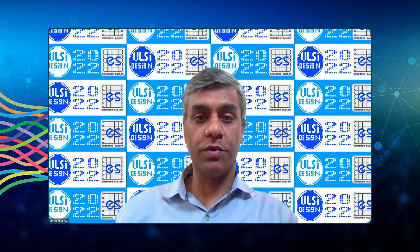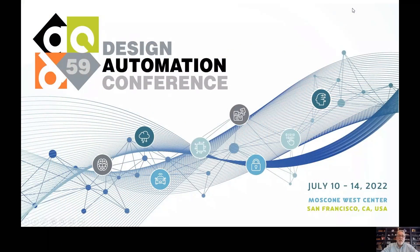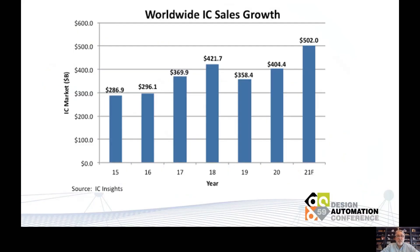He serves on multiple industry advisory boards and is recognized as an international speaker globally. He has published numerous books, articles, and papers on software engineering and embedded systems, is an adjunct faculty professor at the University of Stax and Southern University, and is a senior member of IEEE. Rob Oshana, General Chairman for DAC 59, will share his view on the conference, which will be held in San Francisco this July 10 through 14.